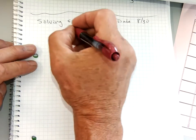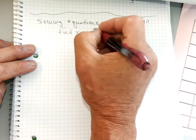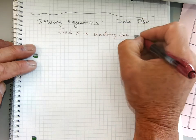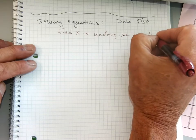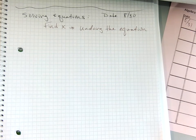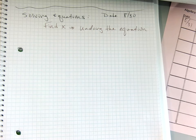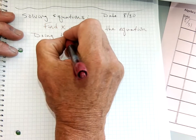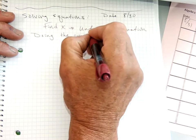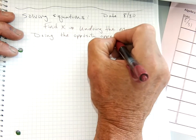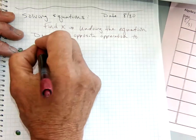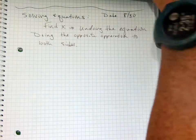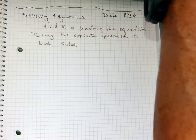We want to find x or find the variable or n or whatever it is by undoing the equation. Now, what the heck does that mean? Undo the equation. The idea is to unravel it by doing the opposite operation to both sides. I'm hoping this is going to be a review. If it's not a review, that's okay. We're going to learn how to do it.